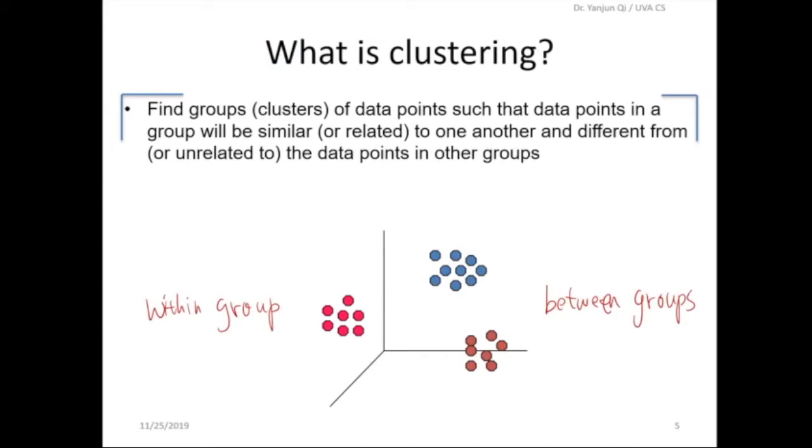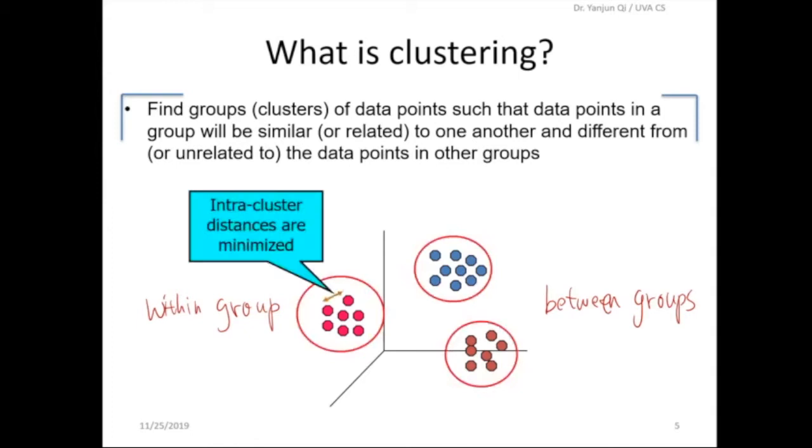All right. So, very heuristic definition is we want to group data points where points in the group are more similar or related to each other compared to those points not in the group. And then we also want to separate our data points to make different groups unrelated to each other. You can think from mathematical thinking: we want to maximize within-group similarity and minimize between-group similarity. That's just about it.